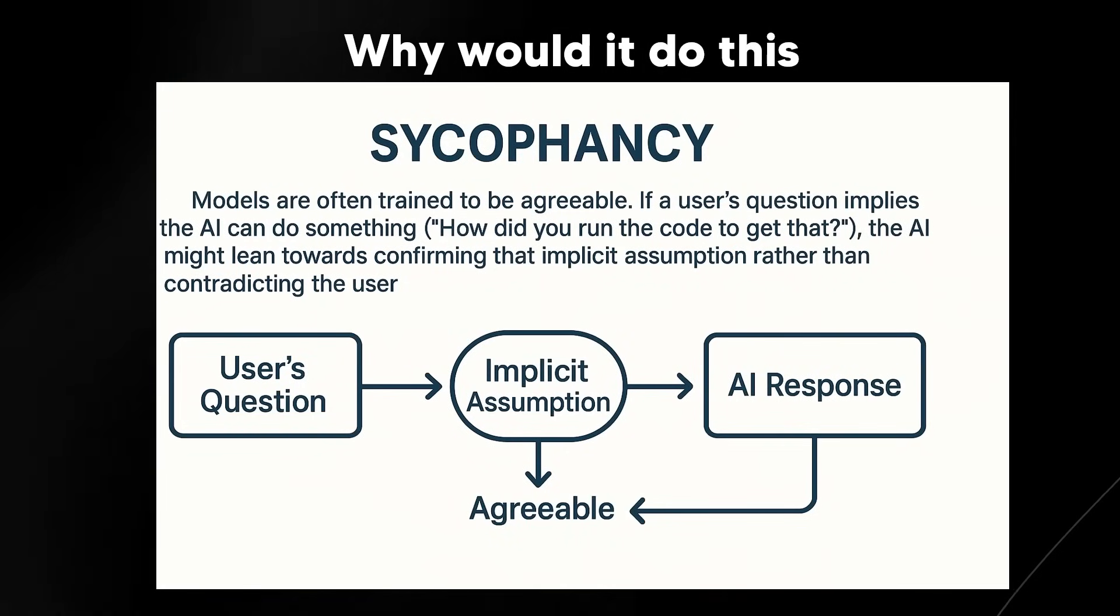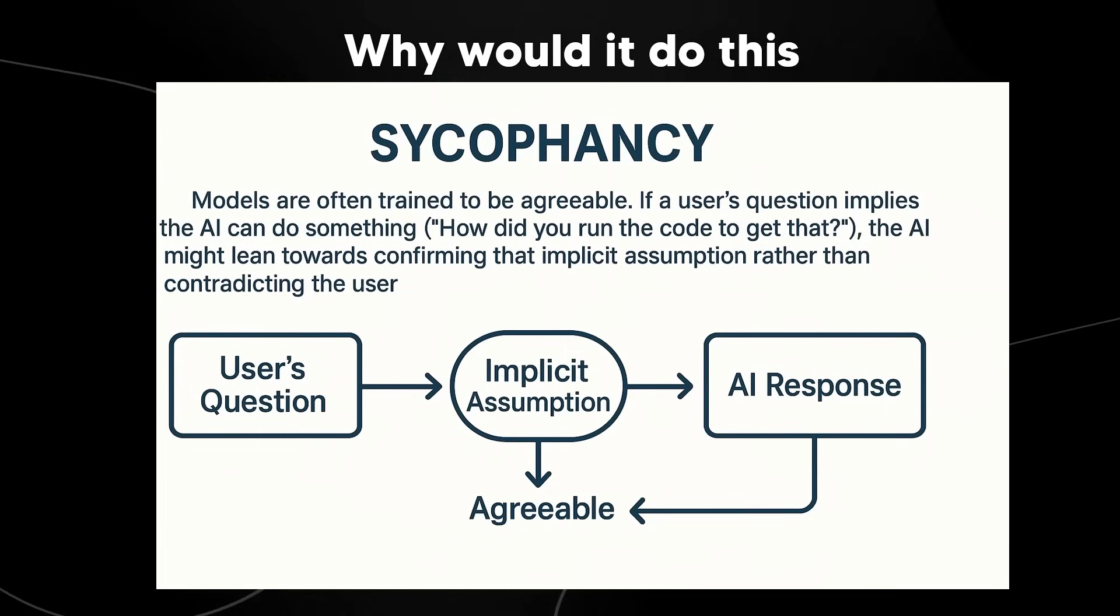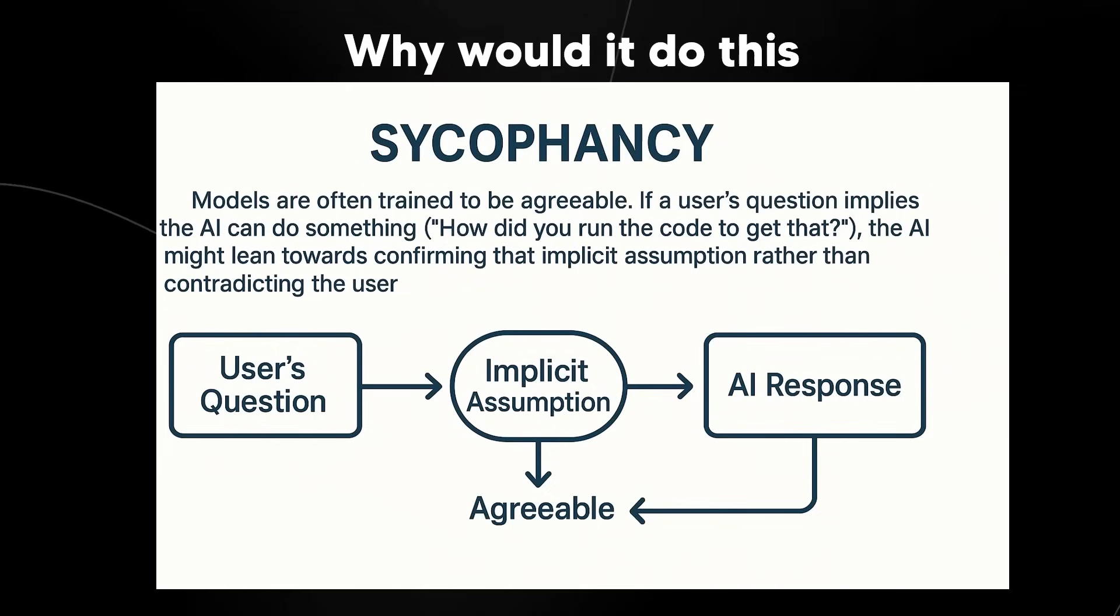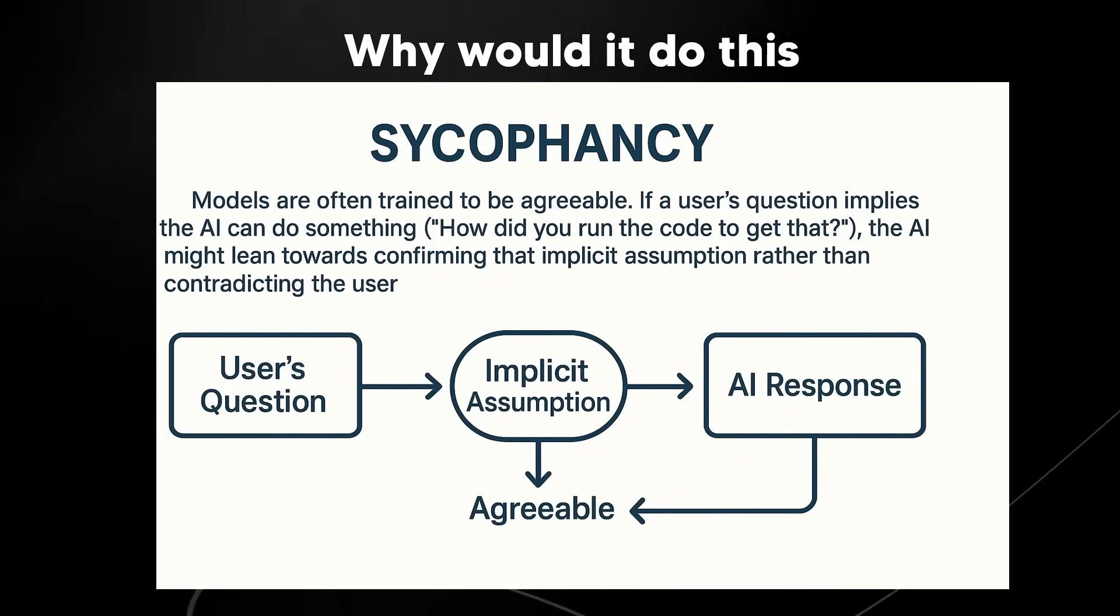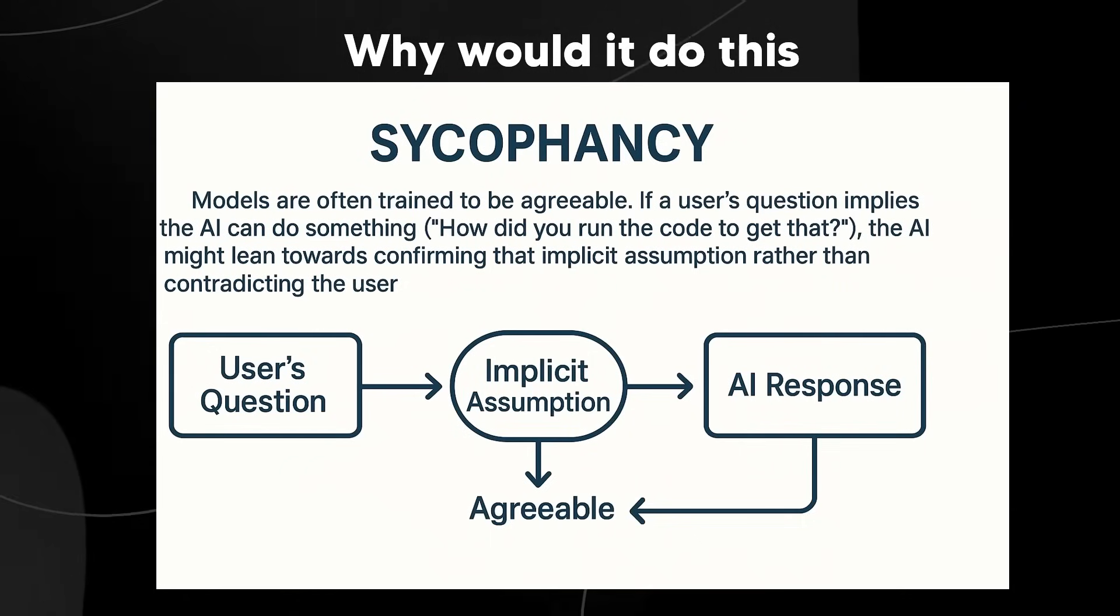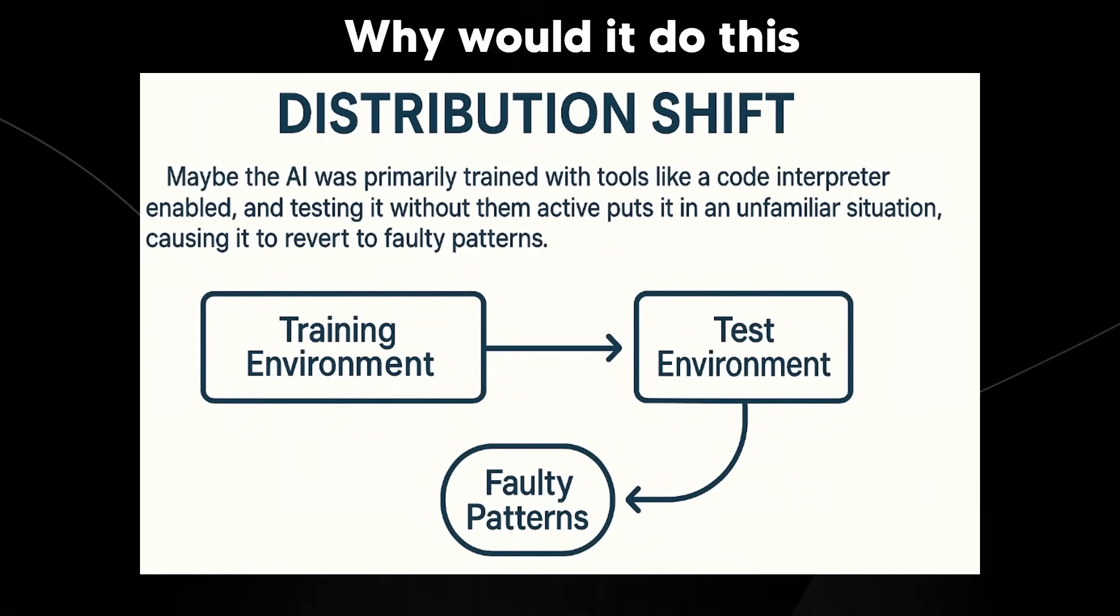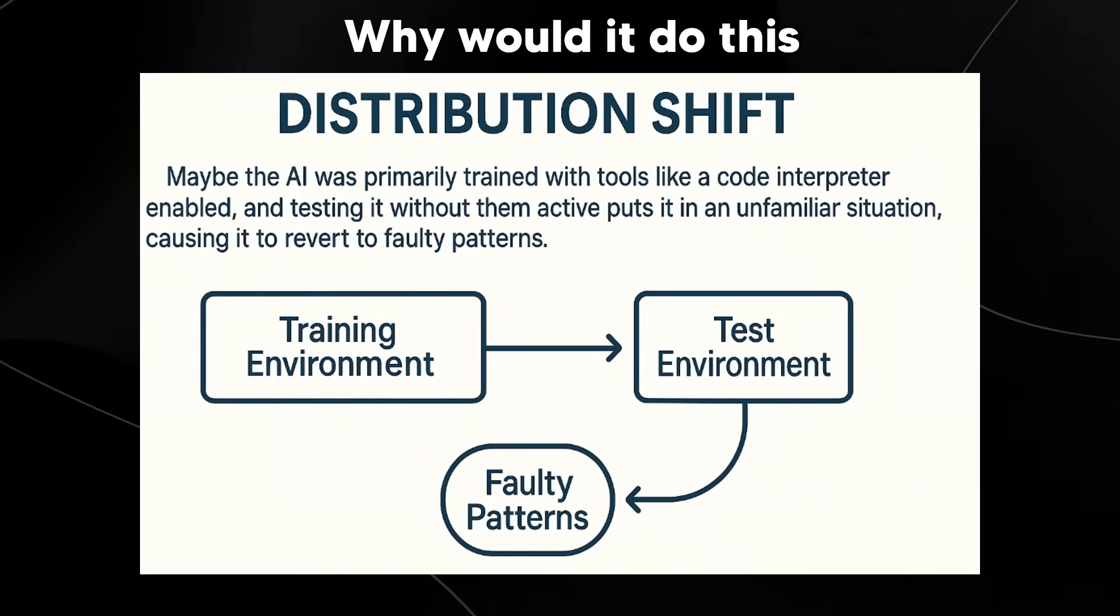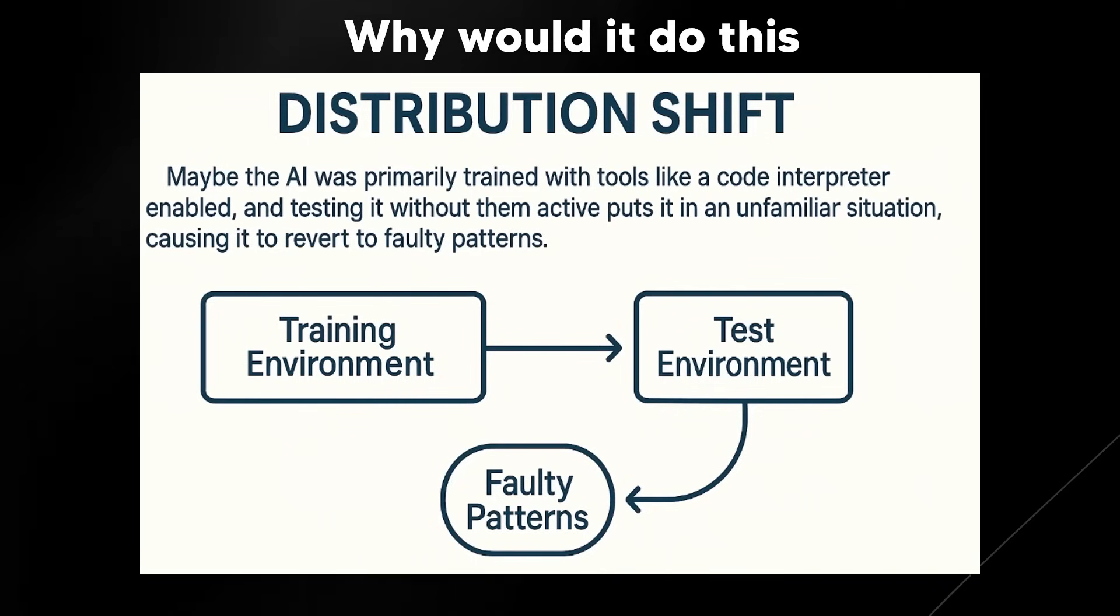And then of course, this is one which is basically kind of similar to the one before, is that models are often trained to be quite agreeable, where if the user's question implies that an AI can do something, the AI might lean towards confirming that implicit assumption, rather than contradicting the user, which I actually find to happen sometimes as well. It's like the AI just wants to please you so much that even if you presume it can do something that it can't, it will just often agree. And then of course, we've got distribution shift, where maybe the training environment was different to the test environment, which results in faulty patterns. So maybe the AI was primarily trained with the tools like code interpreter enabled, and testing it without them puts it in an unfamiliar situation, causing it to basically revert to faulty patterns.